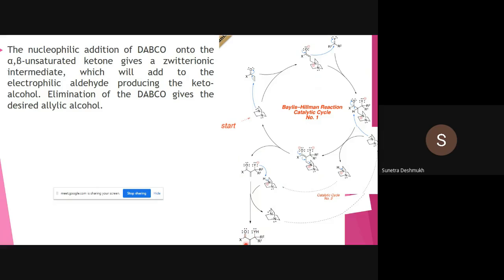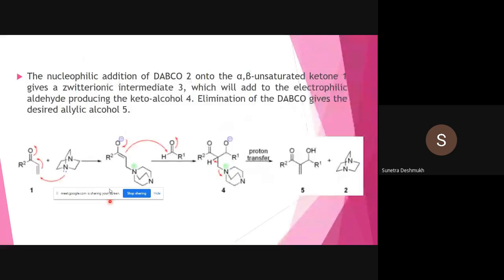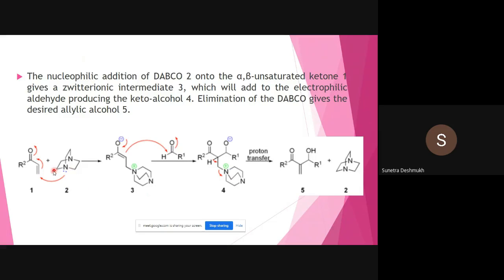We get our allylic alcohol — a carbon-carbon double bond with a hydroxyl group at the adjacent position — as the Baylis-Hillman product. This is our reaction and this is our product. The same mechanism is explained in a simple way here. You can refer to any mechanism given; the same mechanism is presented in two or three ways. The simplified steps are: first, nucleophilic addition of DABCO; second, onto the alpha-beta unsaturated ketone to give the zwitterionic intermediate.